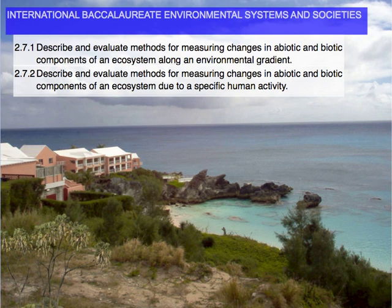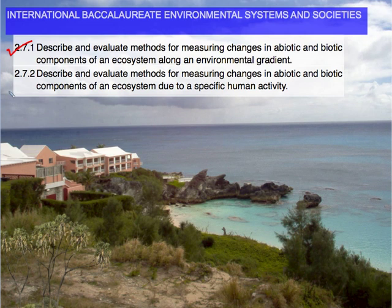Welcome again. Today our journey through the IB Environmental Systems and Societies syllabus takes us to the Mid-Atlantic Ocean and to the island of Bermuda, as we describe and evaluate methods for measuring changes in abiotic and biotic components of an ecosystem along an environmental gradient — objective 2.7.1 — and due to specific human activities — objective 2.7.2.